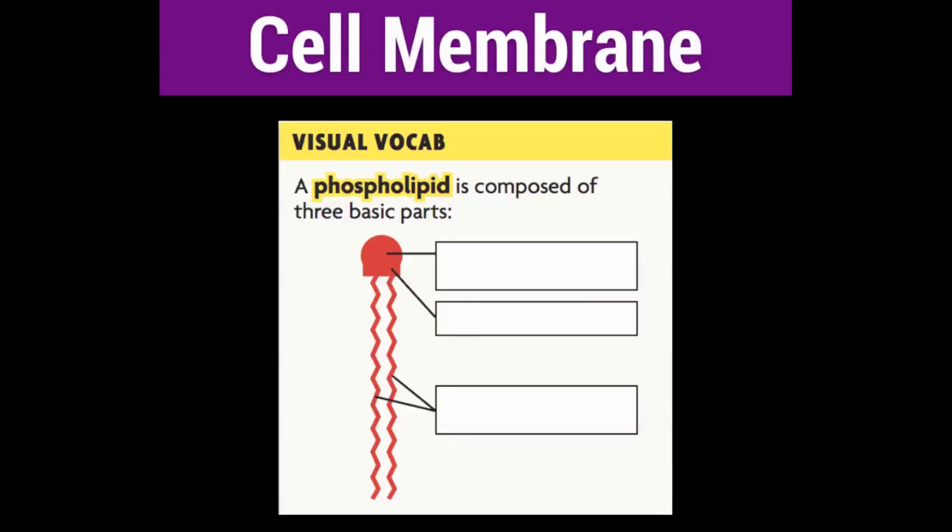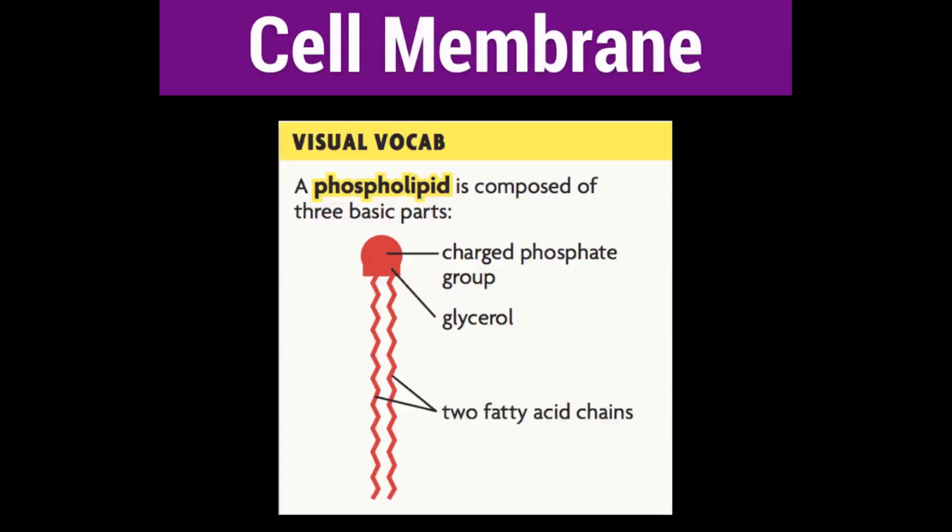A phospholipid is composed of three basic parts. The head is made up of a charged phosphate group and a glycerol. And the tail is made up of two fatty acids.